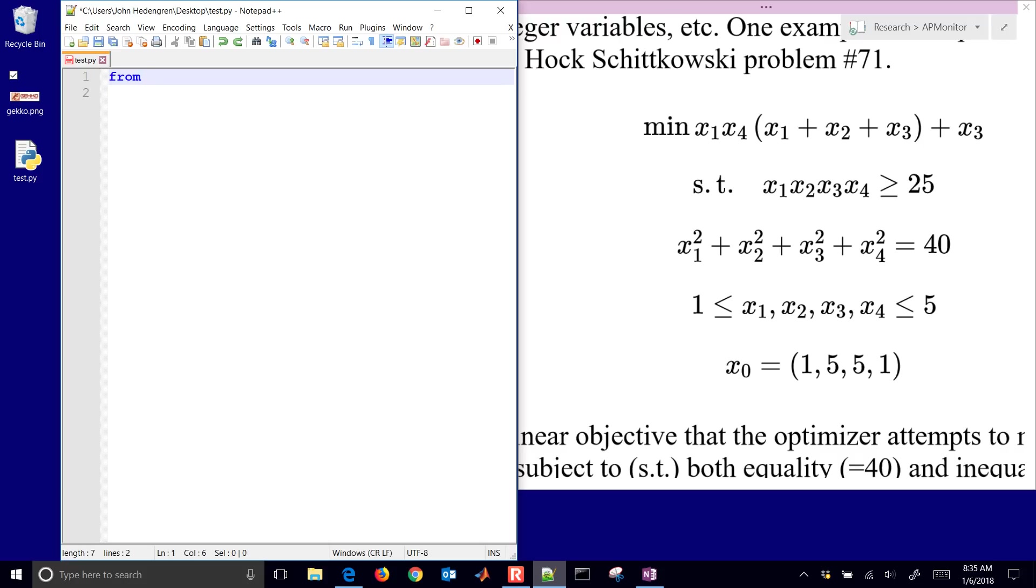The very first thing that you'll want to do is just import GECCO. So I'll go from GECCO import capital GECCO. And then import NumPy. I'll initialize my model. So this is going to create a new class that's going to be my GECCO model. And if you want to, you can run the help on this M object now. And it will give you some help on some of the different commands that GECCO provides.